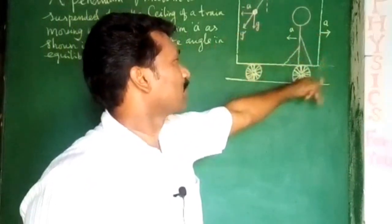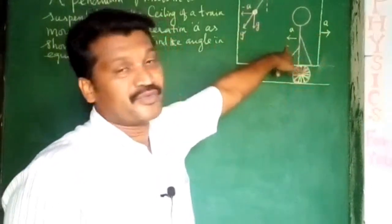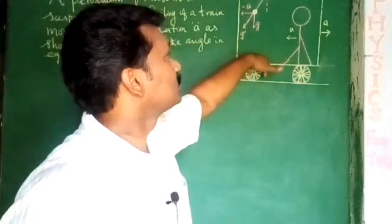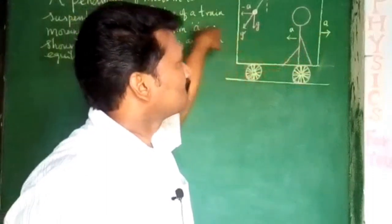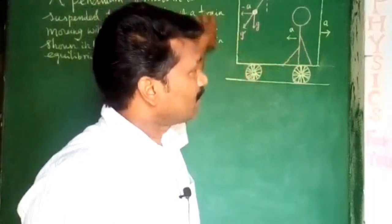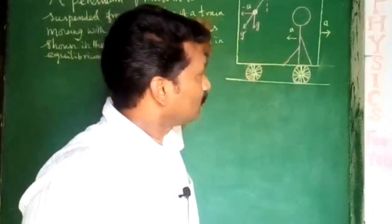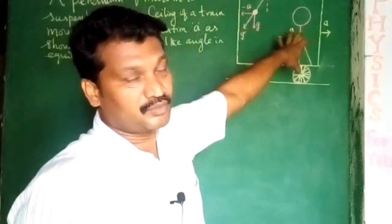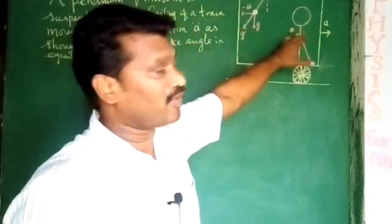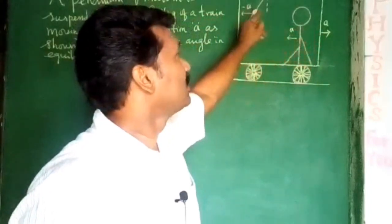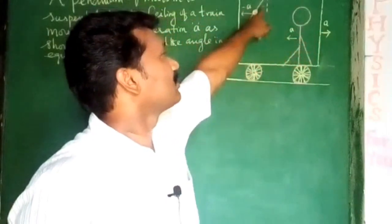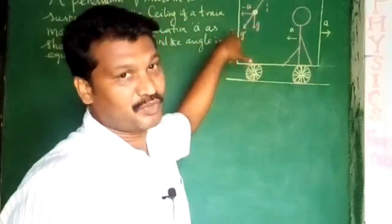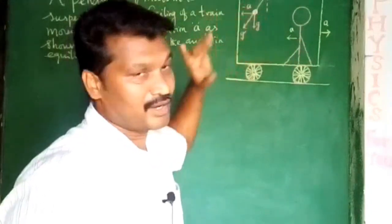Here a man is moving from right to left. Since the train is moving from left to right, the bob will deflect accordingly.